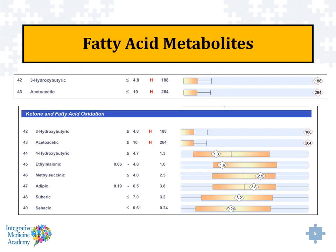The fatty acid metabolite section is an area of the test strongly linked to mitochondrial activity. We get a large percentage of our energy production by burning fat. Sometimes what you'll see is just an elevation of the first two markers, 3-hydroxybutyric and acetoacetic. When those are elevated by themselves, you're usually looking at somebody who has malabsorption — perhaps candida or bacterial overgrowth. It could also be someone who's diabetic or pre-diabetic, or has some type of glucose metabolism problem.